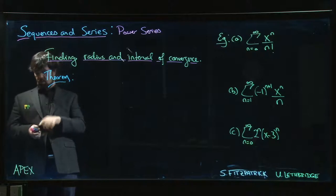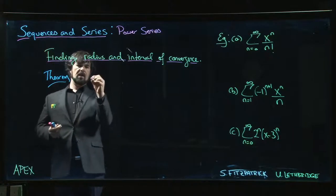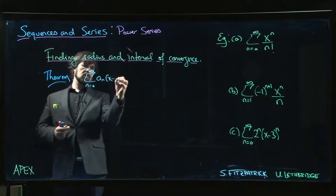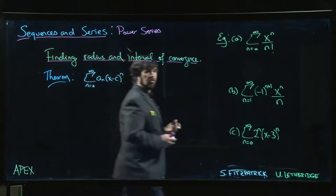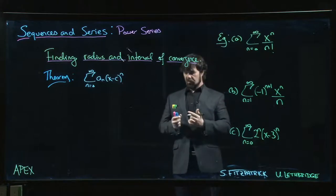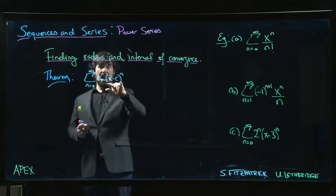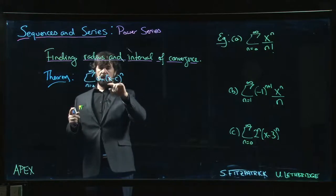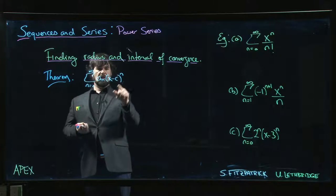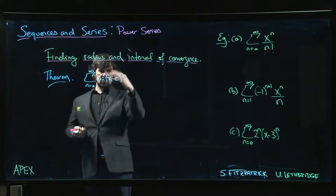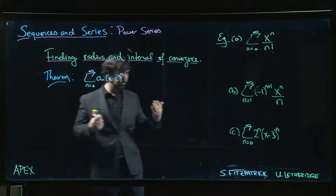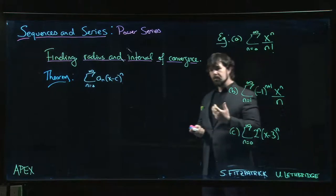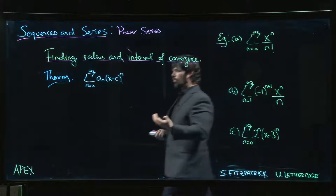The main issue we still have is the following. Somebody hands you a power series, a_n times (x minus c) to the n, and you want to tackle the question of convergence. Since you have powers, both the ratio and the root tests are going to come in handy, because if you take the nth root of that power the power goes away, and with the ratio test powers tend to cancel out. The ratio test tends to be the best tool for the job, but the ratio test only applies to series where the terms are positive.